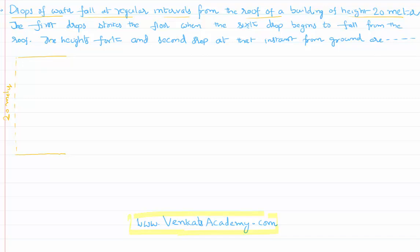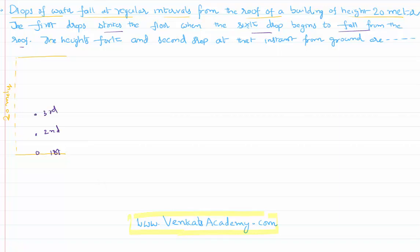It is further given that the first drop strikes the floor when the sixth drop begins to fall from the roof. That means drops are falling at regular intervals of time. The first drop has already reached the ground, and there are second, third, fourth, and fifth drops somewhere in the journey. The sixth drop just begins to fall from the roof, which is at a height of 20 meters. We assume acceleration due to gravity g = 10 m/s².